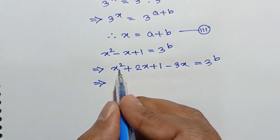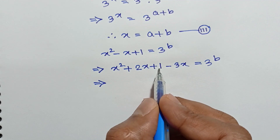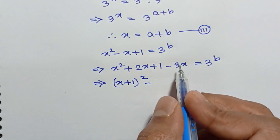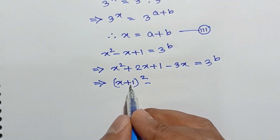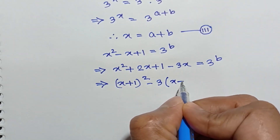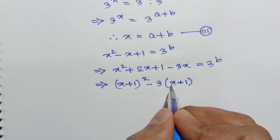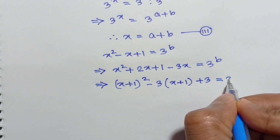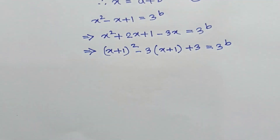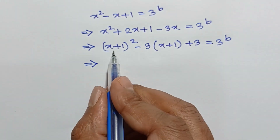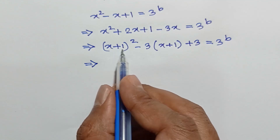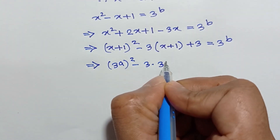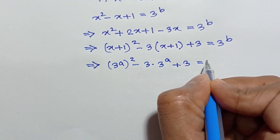This expression is a perfect square formula. We can write it as x plus 1 whole square minus 3 times x plus 1 plus 3 is equal to 3 to the power b. From equation 1, x plus 1 is equal to 3 to the power a, so substituting: 3 to the power 2a minus 3 times 3 to the power a plus 3 is equal to 3 to the power b.